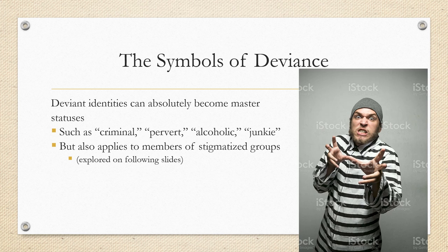This also applies to members of stigmatized groups. People who've been convicted of a crime will very often not lead with telling you they just got out of prison — that is called masking behavior. The person doesn't tell you they just got out of prison because they want to continue to interact with you in a way that you would not normally interact with a prisoner.